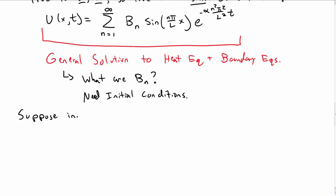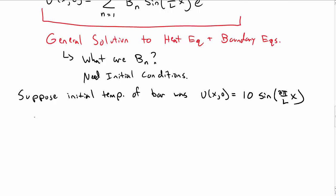And here we need initial conditions in order to figure out what these constants are. So suppose that we have the initial conditions given by the initial temperature of the bar. Say u of x comma 0, so at t equal to 0, is 10 sine of 2 pi x over L. That could be some initial temperature of the bar.